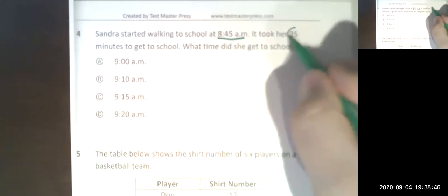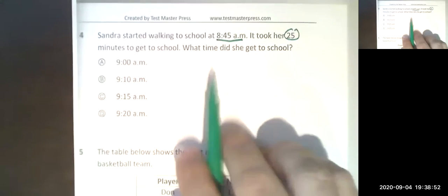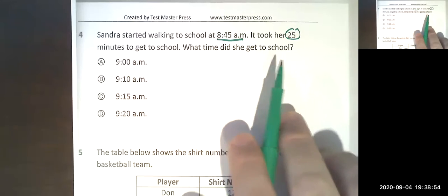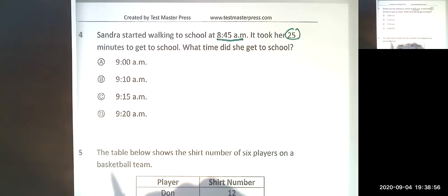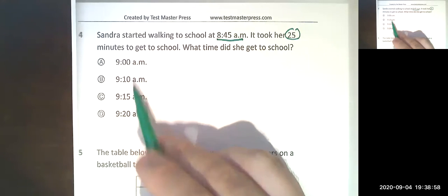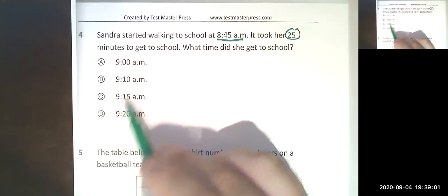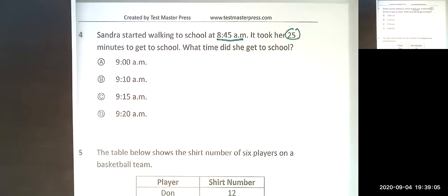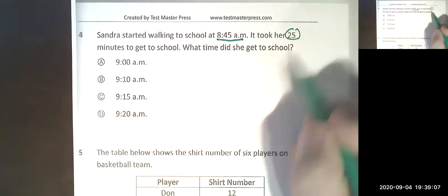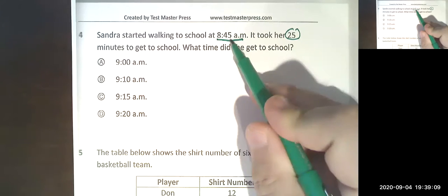So I like to first underline this 8:45 is when she started, it took her 25 minutes to get there. What time did she get to school? Let's take a look. Now they made all of these AM, they're all nine o'clock, they're all within a few minutes of each other, so they didn't give us any easy outs here.